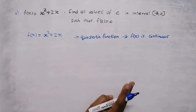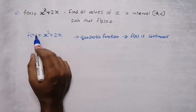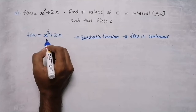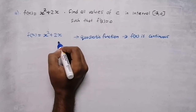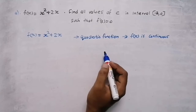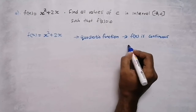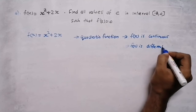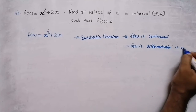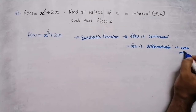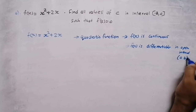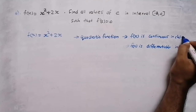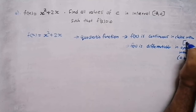Now we need to check the second condition: is this function differentiable? Yes, of course it is differentiable. We can differentiate x²: d/dx of x² is 2x, and d/dx of 2x is 2. Quadratic and polynomial functions are also differentiable, so the second condition is also satisfied. f(x) is differentiable in open interval (a, b), and continuous in closed interval [a, b].